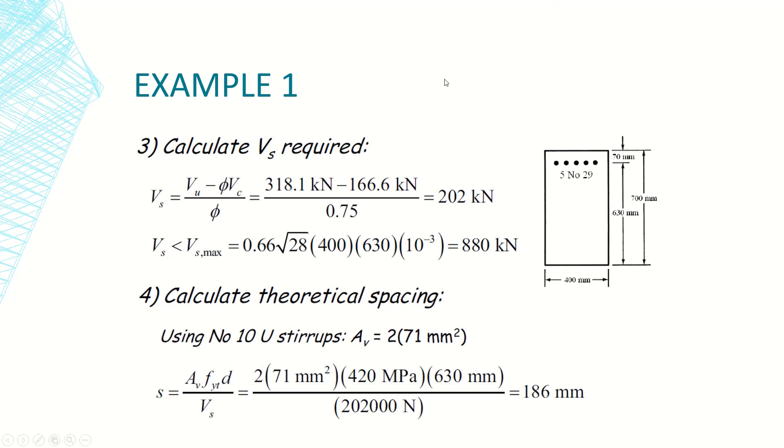First of all let's calculate the required Vs. We all know that Vs equals v ultimate minus phi Vc, the difference between the ultimate shear and the concrete capacity, and we divide it by phi since this is nominal. So here we have Vs as 202 when the ultimate is equal 318, this is the maximum value. We have to check that Vs is less than the maximum allowable as per code which is 880. If Vs exceeds this limit we have to enlarge the beam section.